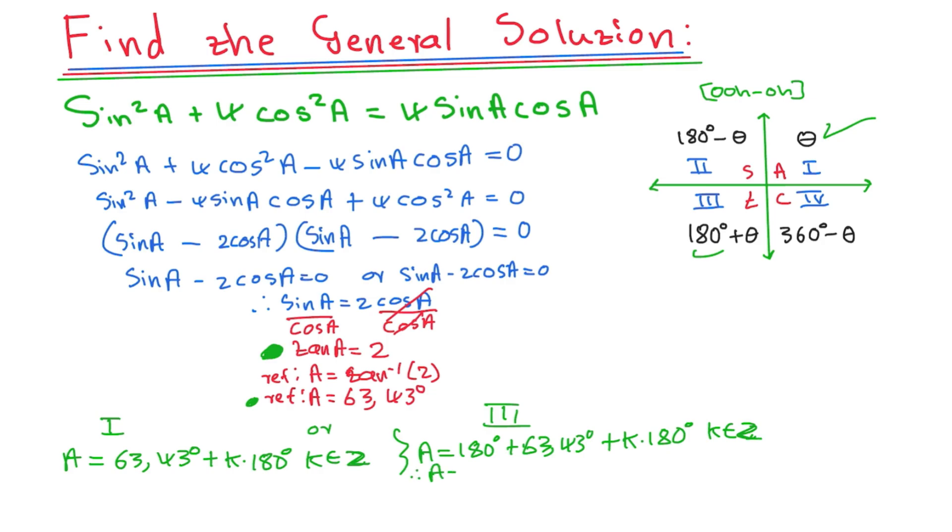And therefore, our A will be what? 180 plus 63.43 degrees will give me 243.43 degrees. Then you say plus k, 180 degrees, where k is the element of integers. Then you are done, and you are done.